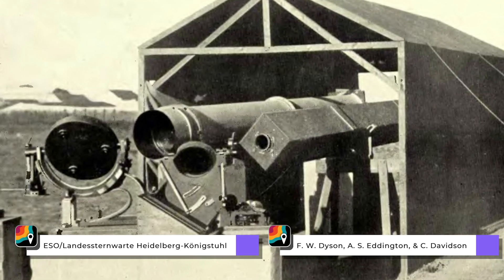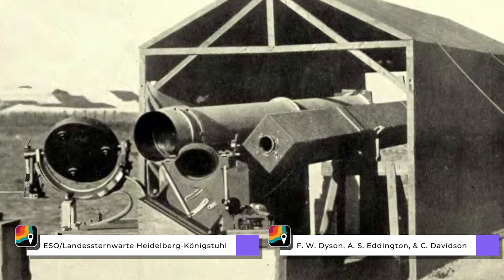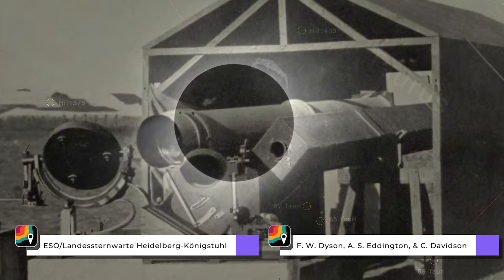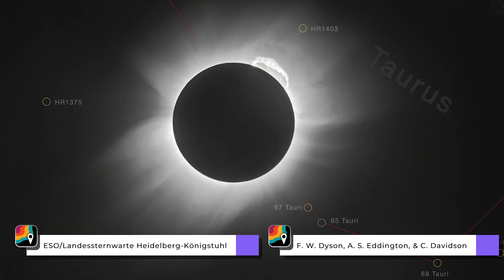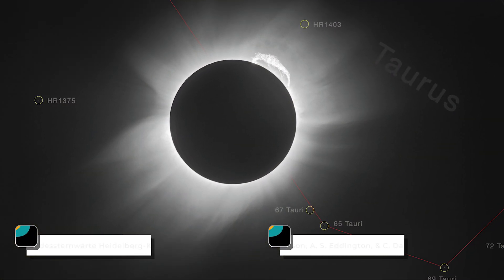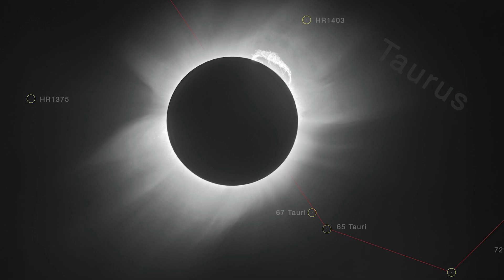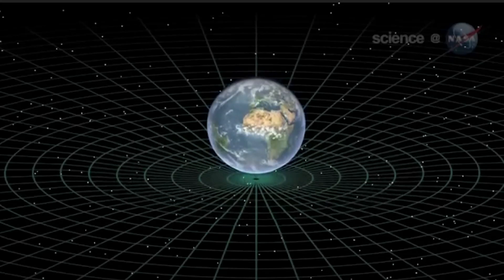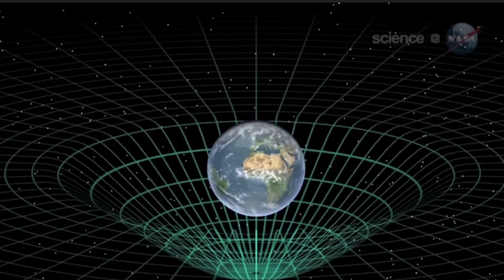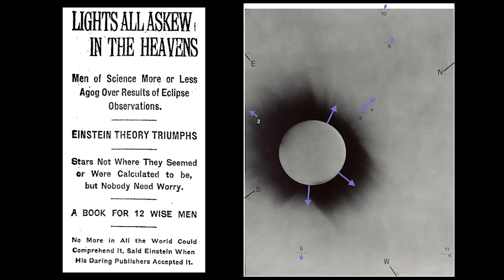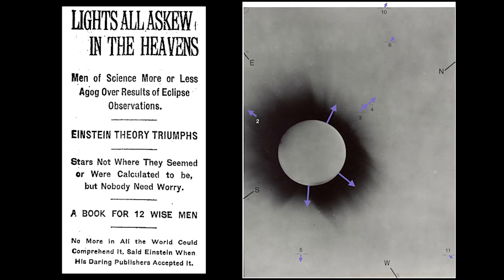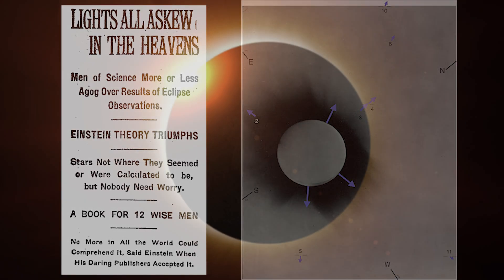During the eclipse, they snapped photos of the positions of the stars and compared those pictures to night sky photos when the sun wasn't nearby in the sky. The result? A difference of 0.0005 degrees, matching with Einstein's predictions. General relativity was real.